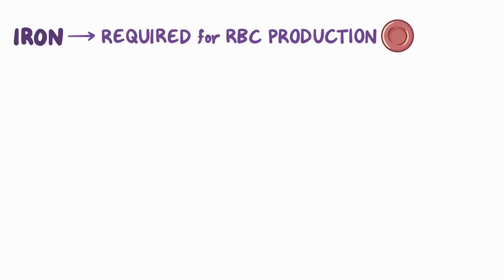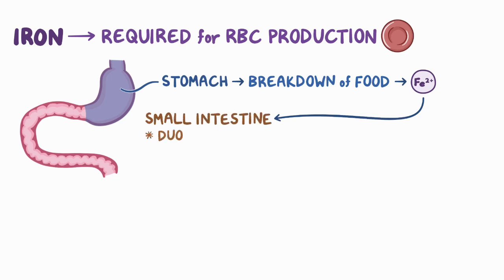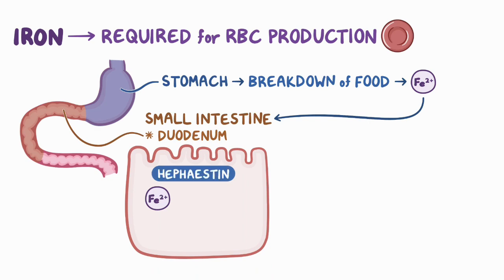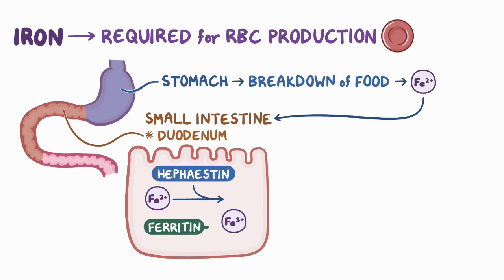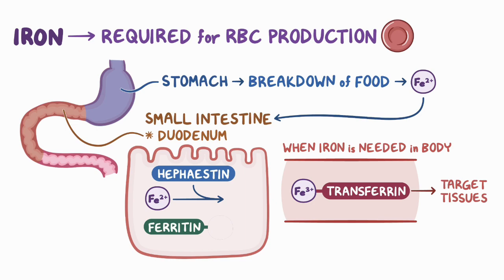We get the iron required for RBC production from our diet. Following breakdown of food in the stomach, iron is released as Fe2+ ions and then absorbed in the small intestine, specifically the duodenum. Inside the duodenum cells, an enzyme called hephaestin oxidizes iron 2+ to iron 3+ ions. This form of iron binds to a protein called ferritin, which temporarily stores the iron. When iron is needed in the body, some iron molecules are released from ferritin and transported into the blood, where they bind to an iron transport protein called transferrin that carries iron to various target tissues and releases them there.